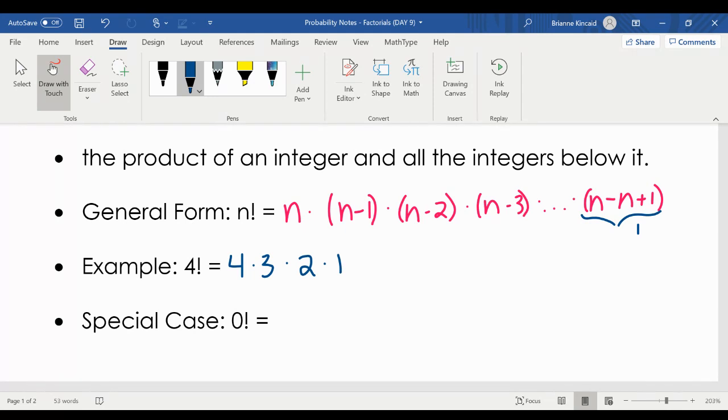We do have a special case, which is 0 factorial, which is actually just 1 every single time.